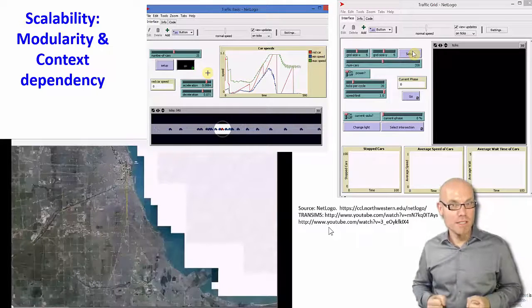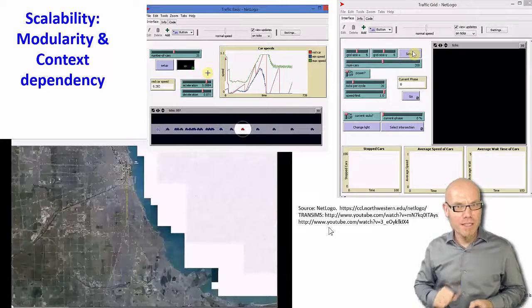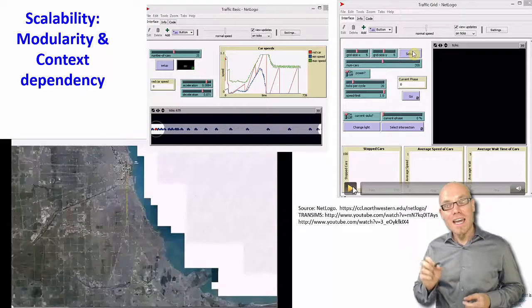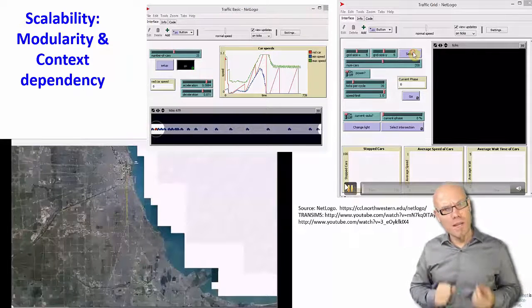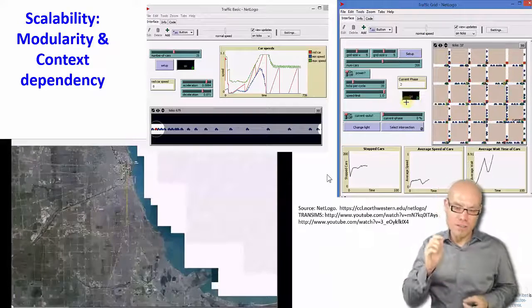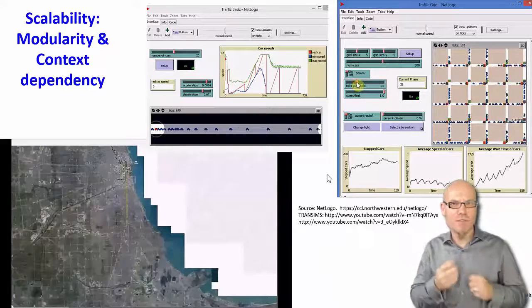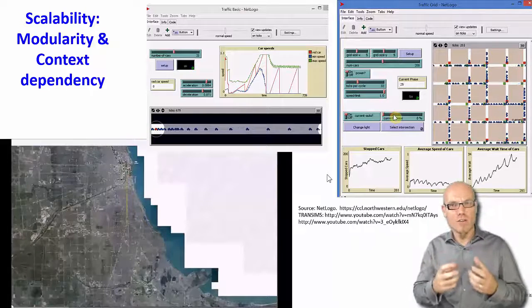Now once you have this, you programmed it, you can just copy and paste this kind of code - scalability, economies of scale - and plant it into a little bit more complex model where you have a traffic grid. And then you introduce traffic lights, and now you see what happens with these traffic lights, with the acceleration, deceleration, and now you study that.